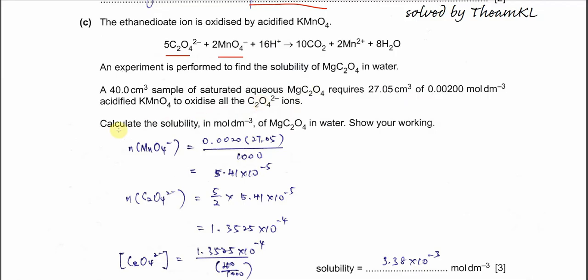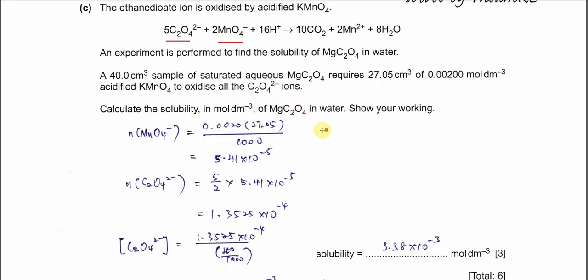And therefore calculate the solubility of this magnesium ethanedioate in water. So the solubility means you need to calculate the concentration of the ethanedioate. So first you need to calculate the moles of the permanganate ion, MnO₄⁻.